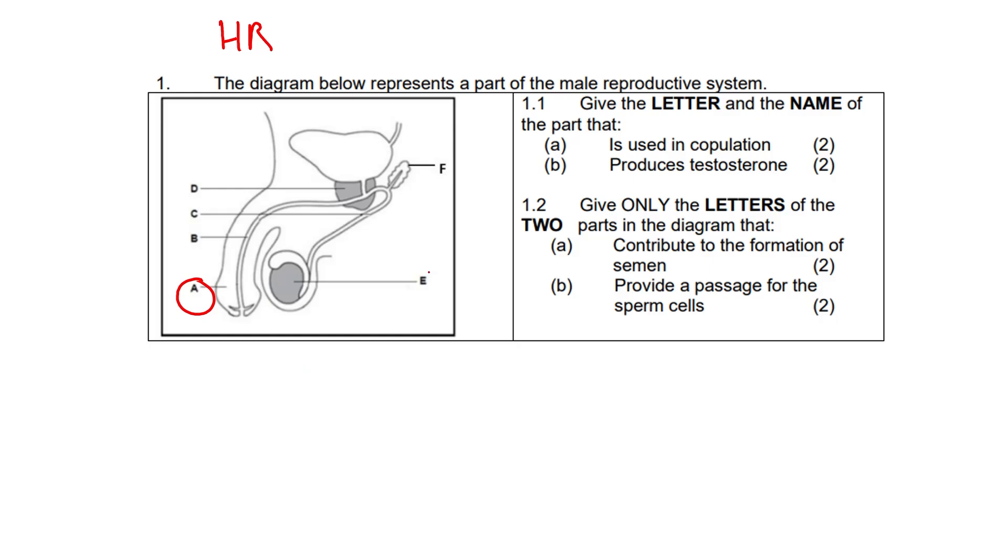Produces testosterone - those are the testes. 1.2: Give only the letters of the two parts in the diagram that contribute to the formation of semen. That would be D and F, D being the prostate and F the seminal vesicles.